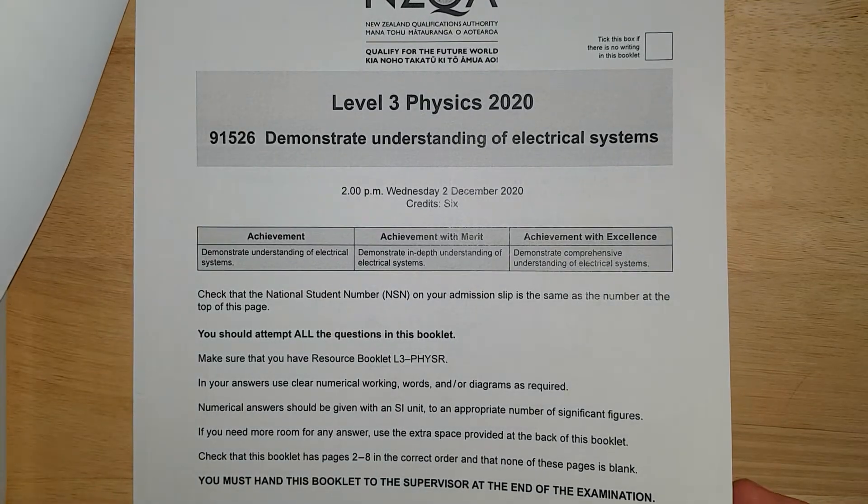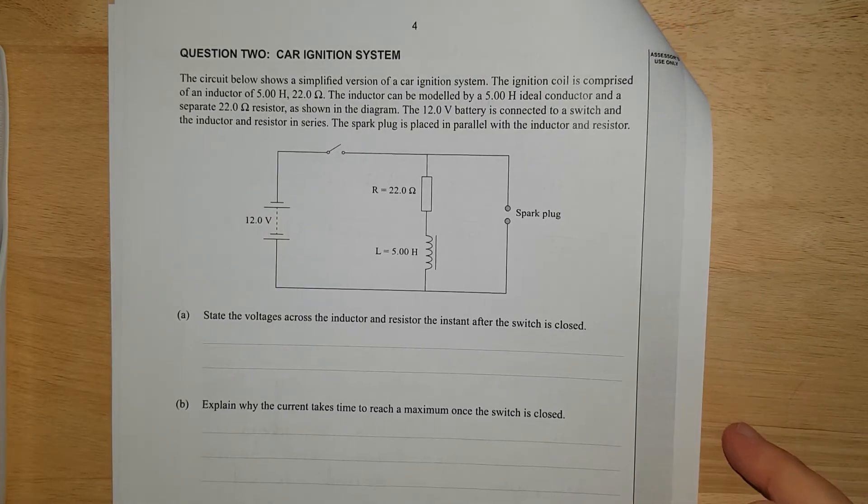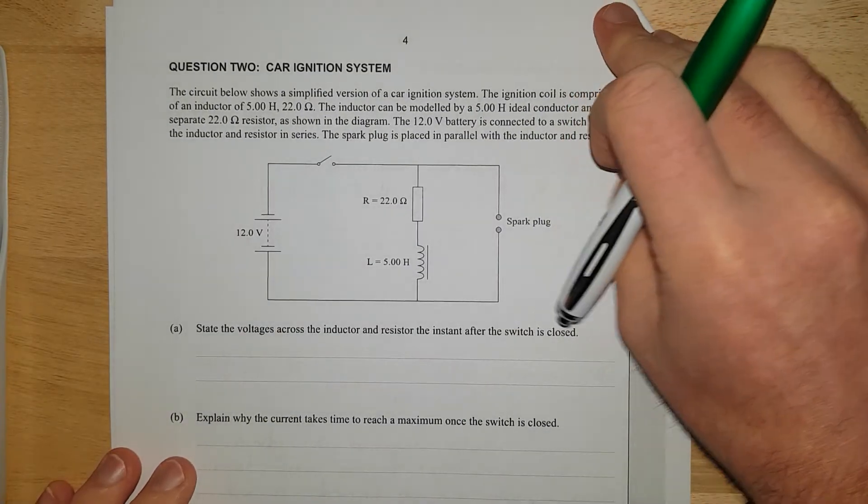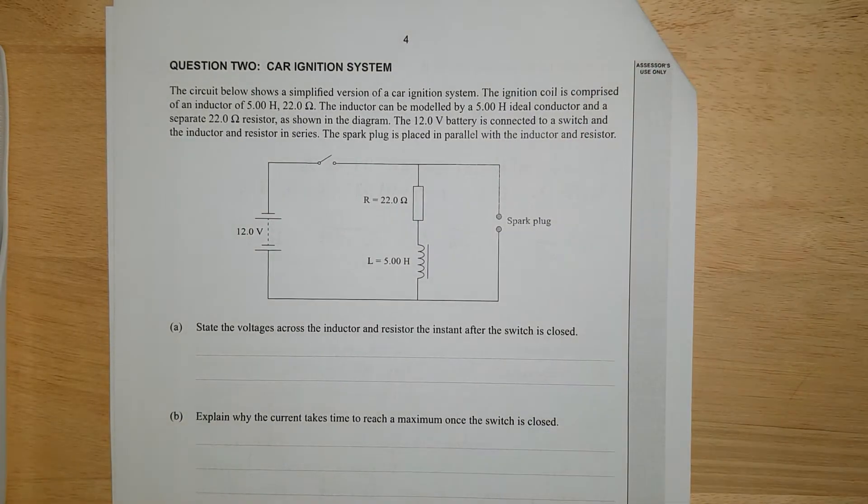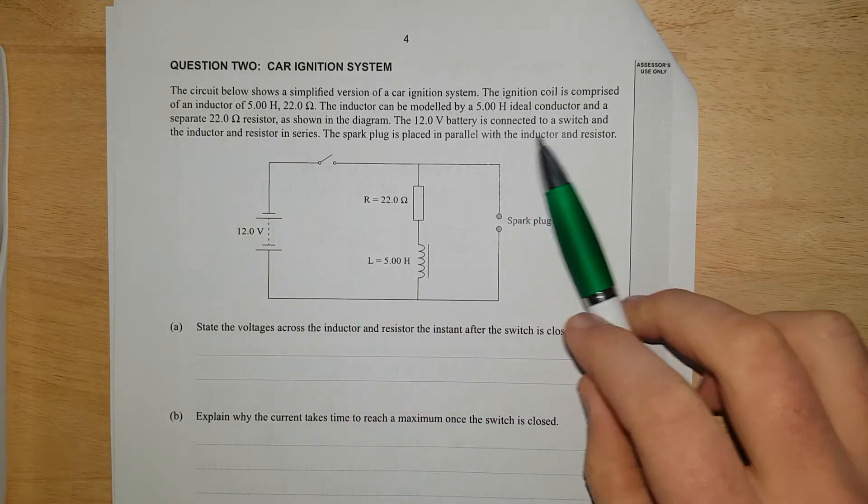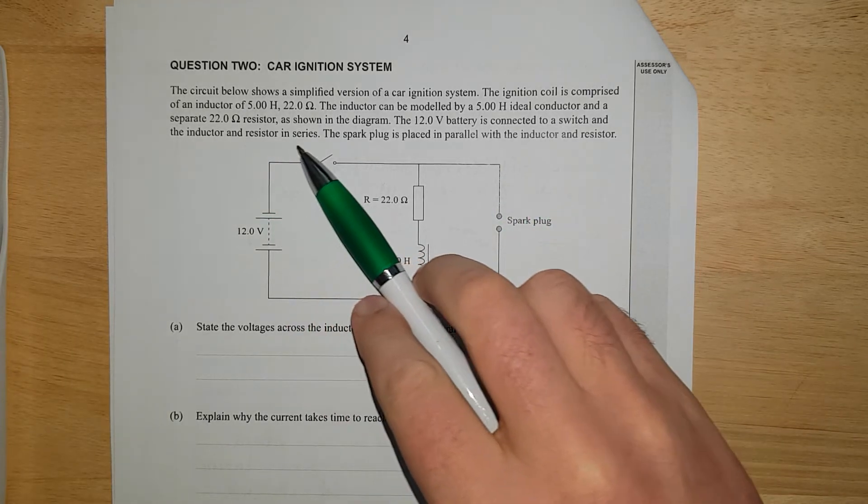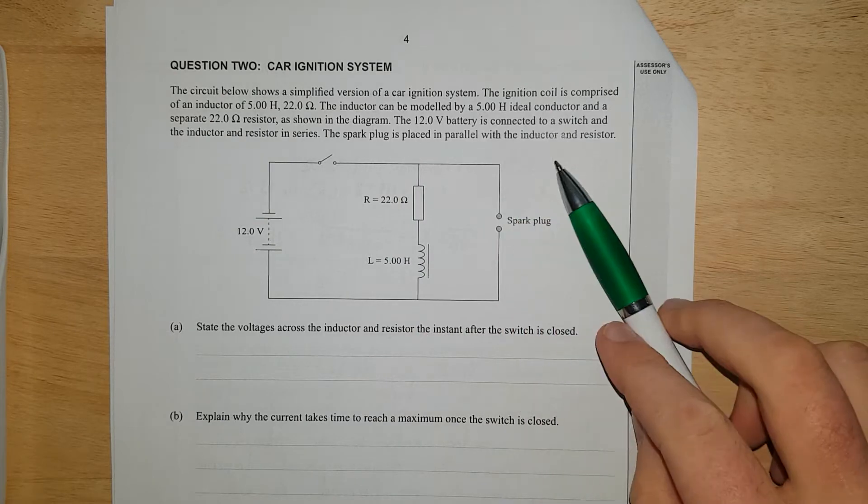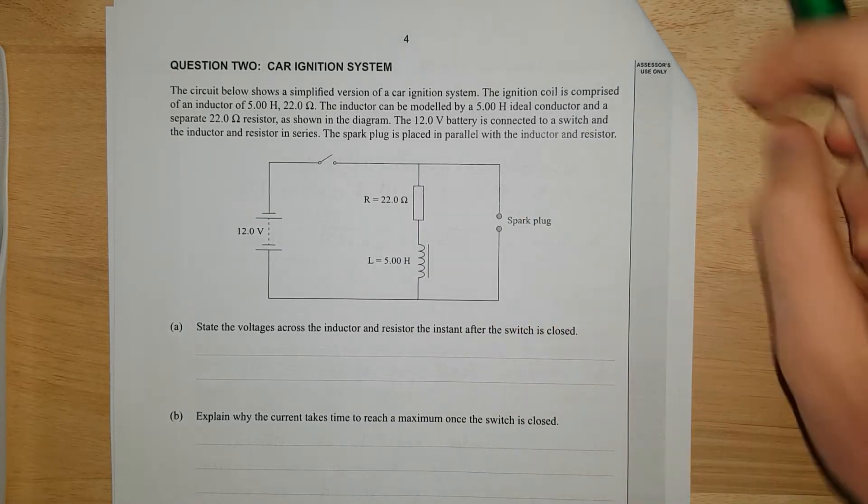This is question two of the 2020 L3 physics exams. The circuit below shows a simplified version of the car's ignition system. The ignition coil is comprised of an inductor of 5 Henrys, 22 ohms. The inductor can be modeled by a 5 Henry ideal conductor and a 22 ohm resistor. On the diagram, you've got a 12 volt battery connected to a switch, an inductor and resistor in series. Spark plug is placed in parallel with the inductor and resistor.